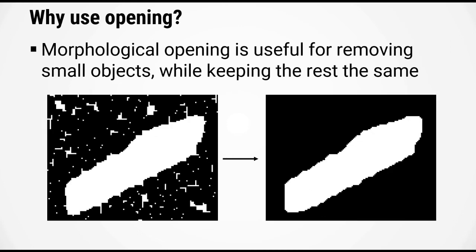Another use for morphological opening is for removing small objects. So for example if you have an image that had a lot of noise, when you segment the image you might see a lot of the speckles. But by using morphological opening you can remove the speckles and still retain the shape of your actual object of interest.